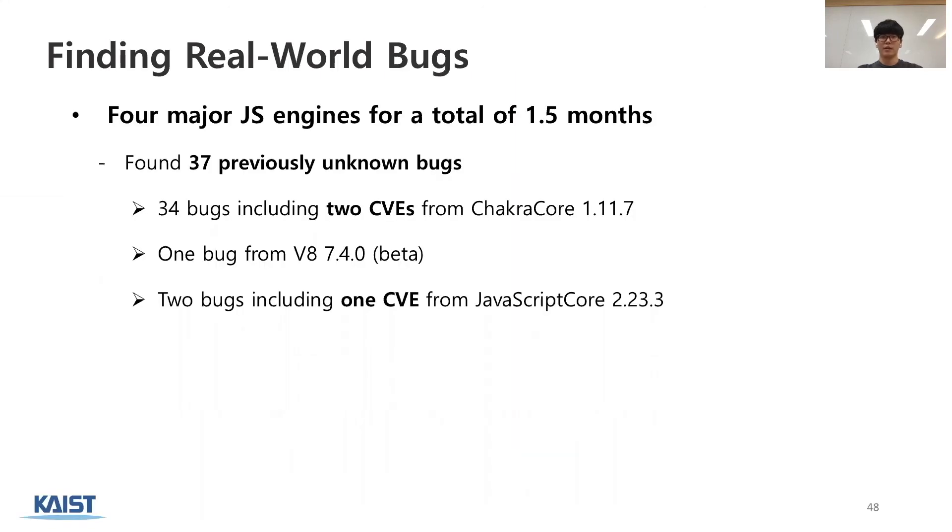Finally, we ran Montage against the latest JS engines and found 37 previously unknown bugs. Among the found bugs, 2 and 1 security bugs were respectively found from ChakraCore and JavaScriptCore. 26 of them were patched at the time of writing, and especially Microsoft rewarded with $5,000 for the bug found in ChakraCore.